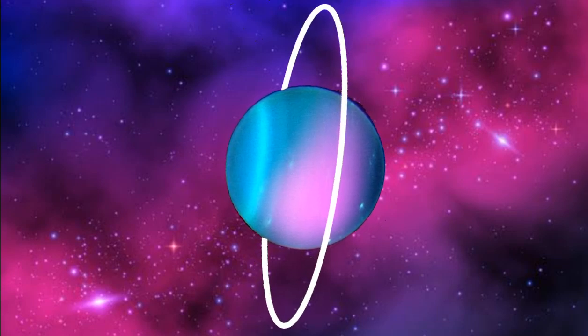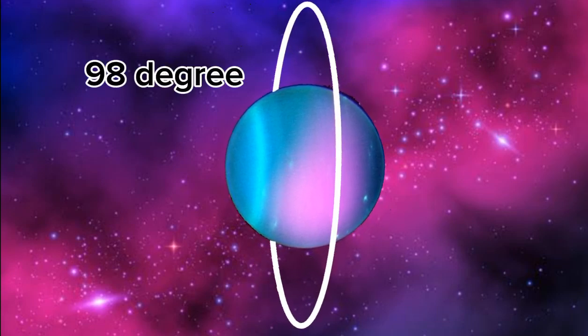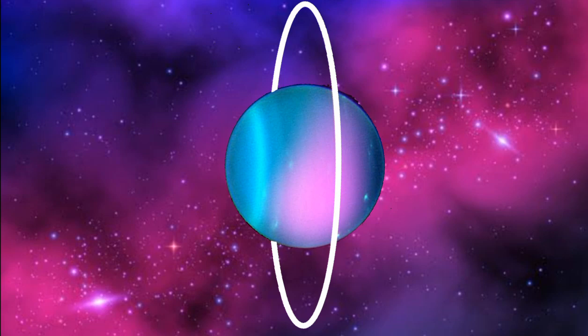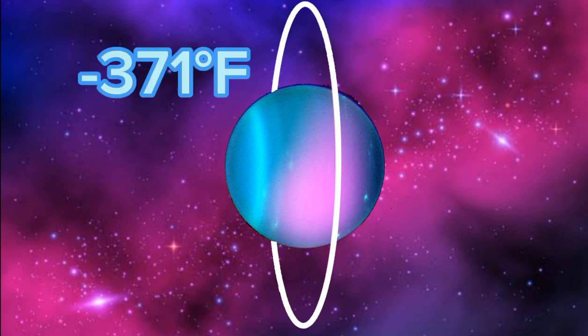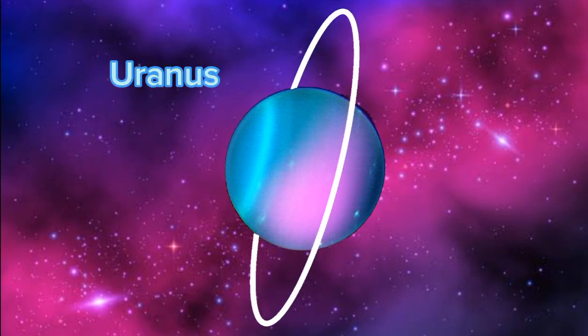My tilt is extreme at nearly 98 degrees. This causes the most extreme seasons in the solar system. The solar system's lowest temperature recorded on me in Fahrenheit is minus 371 degrees. I'm the coldest with a bite.